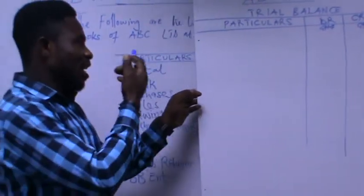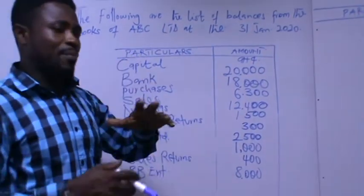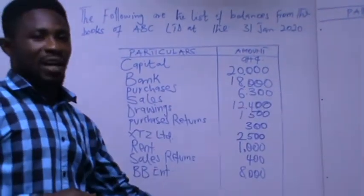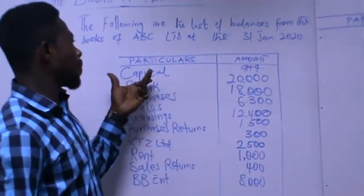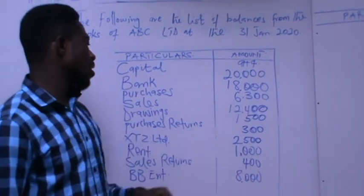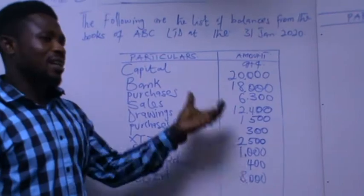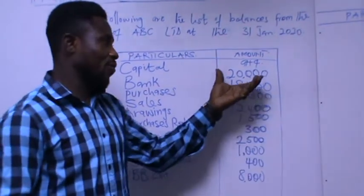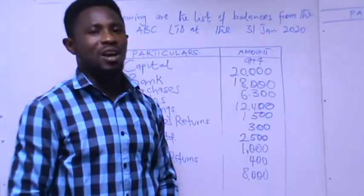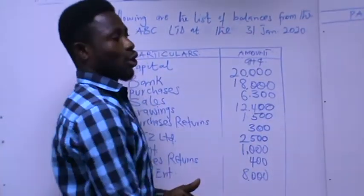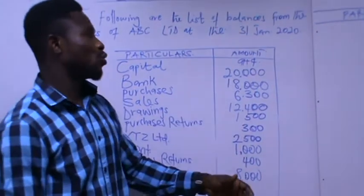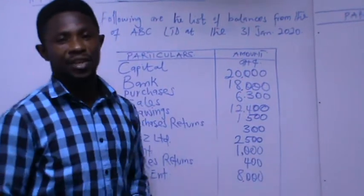We have a list of balances from the previous tutorial on balancing of accounts — check the description box for the link. From that tutorial we have: capital account 20,000; bank account 18,000; purchases 6,300; sales 12,400; drawings 1,500; and so on. We take these balances to prepare the trial balance. Each account balance must be posted to either the debit side or the credit side.